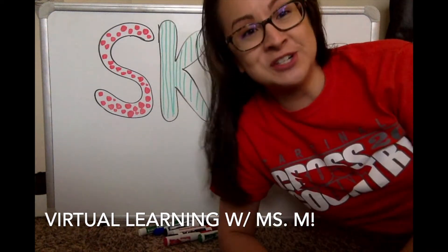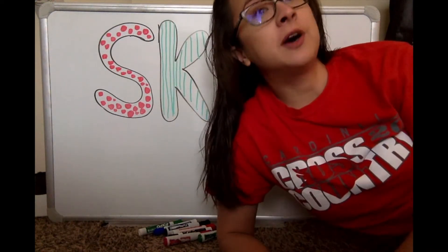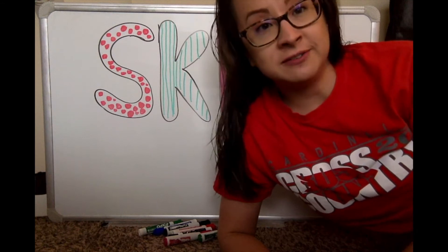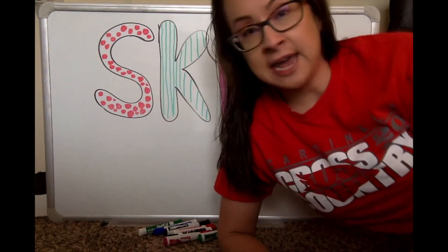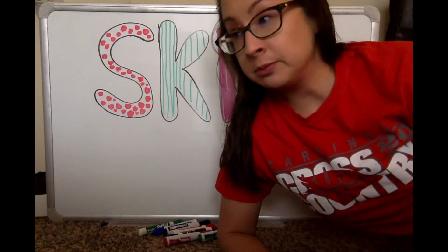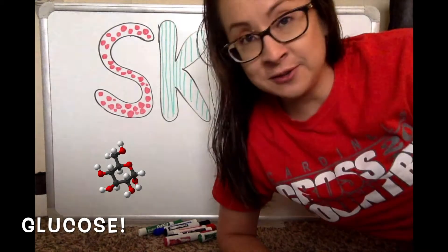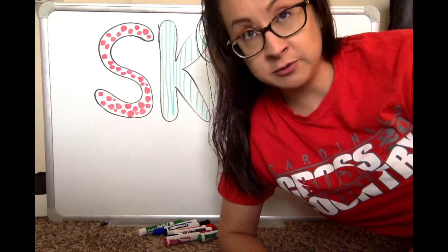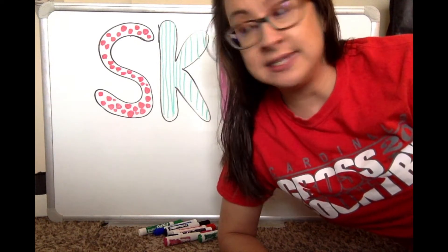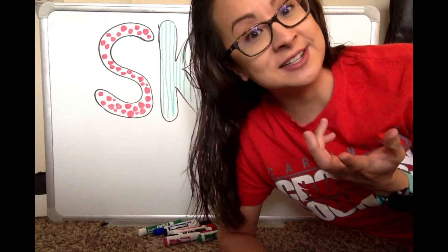Hello and welcome back to virtual learning with Miss M. All life on Earth depends on energy from the Sun. It is this energy that allows plants to produce glucose, but it is also this energy in the form of ultraviolet photons that can damage the DNA in your cells and cause skin cancer.